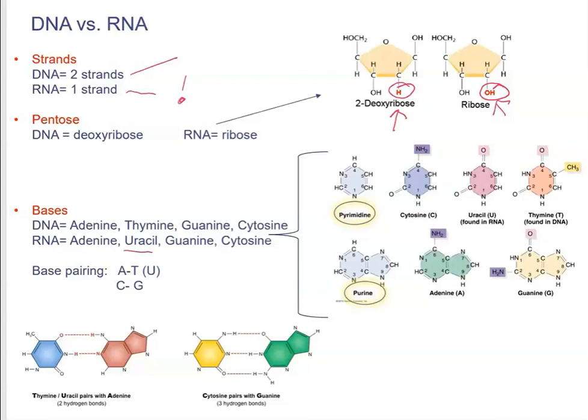Base pairing rules, A with T and C with G. If you look at further categories of these bases, we have what we call pyrimidines and purines. The difference between those is in the number of rings that they have. Pyrimidines will have a single ring. And purines will have a double ring, these two rings are fused together.